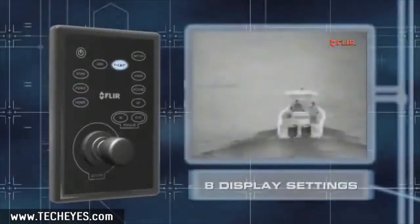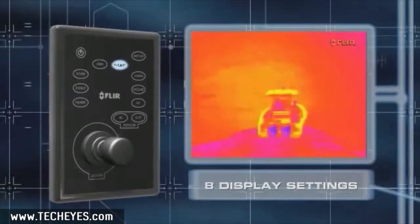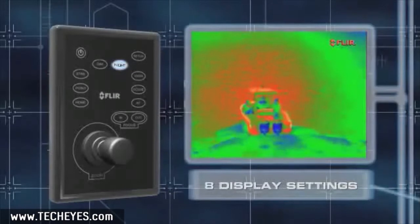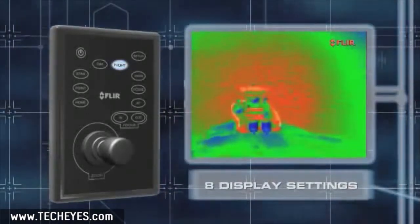The JCU also lets you select from Voyager 2's eight selectable display settings. These color palettes let operators choose the image display scheme they like most.